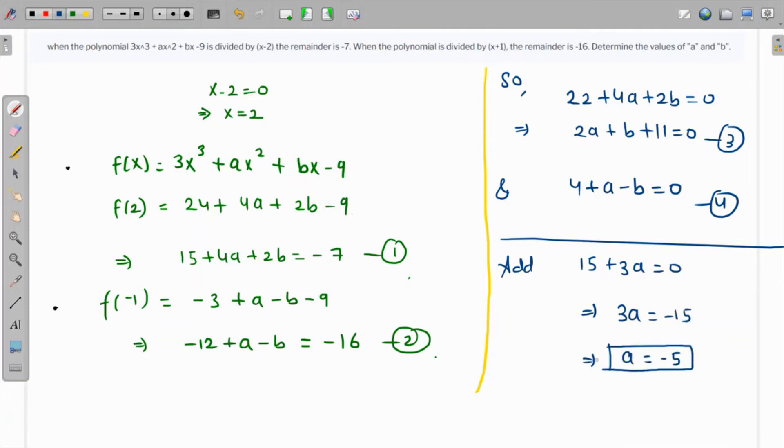If the value of a is -5, then we can use equation 4 to get the value of b. The value of b is 4 + a from equation 4. The value of a is -5, and 4 - 5 = -1, which is the value of b.